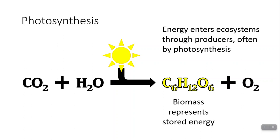As you know from freshman biology, the way that organisms capture solar energy is through photosynthesis. The equation for photosynthesis starts with carbon dioxide and water. The source of most energy in ecosystems on the planet is the sun, and with the input of solar energy, it gets stored in the form of glucose — C6H12O6 — and then oxygen is released as a waste product.